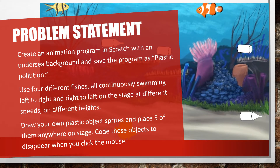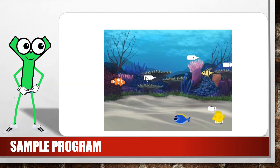Now let's create a program in Scratch with an undersea background and save the program as 'plastic pollution'. Use four different fishes, all continuously swimming from left to right and right to left on stage at different speeds and different heights. Draw your own plastic object sprites and place five of them anywhere on stage. Code these objects to disappear when you click the mouse. Don't forget to save all the changes as you go along. Here's an example of what your program might look like.